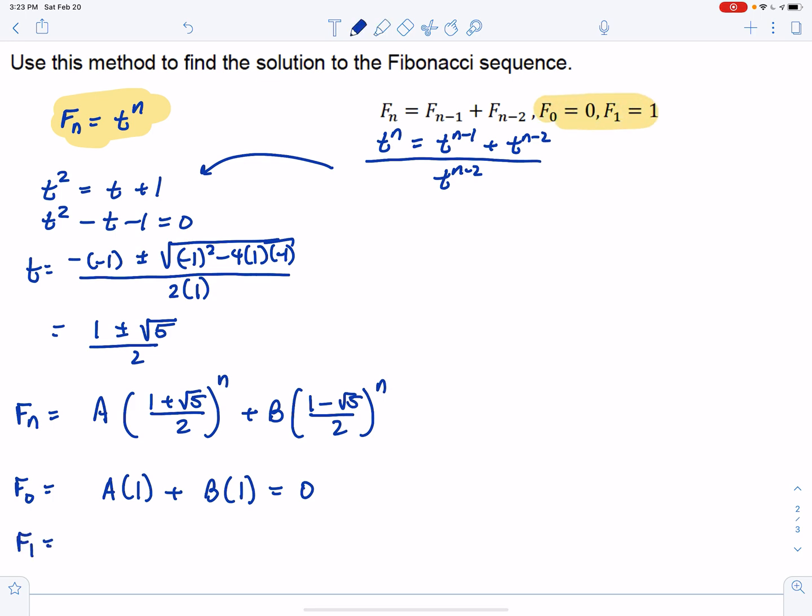So F1 is equal to A times 1 plus root 5 over 2, plus B times 1 minus root 5 over 2, and that's equal to 1, because that was actually the first Fibonacci number. So how are we going to work with this?